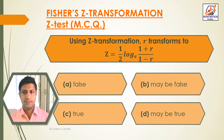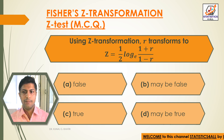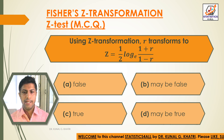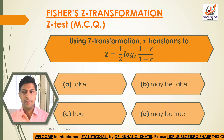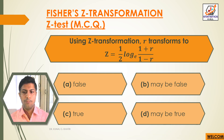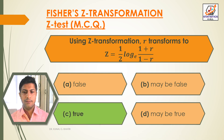Next question. Using Z-Transformation, R transforms to Z is equal to half log of (1 plus r) divided by (1 minus r), to the base E. Option A: False. Option B: May be false. Option C: True. Option D: May be true. Here we have the answer: Option C, True.